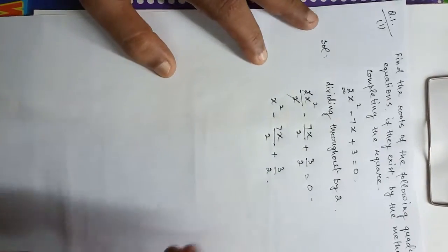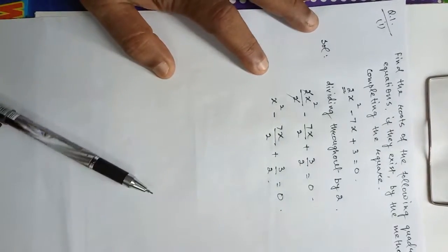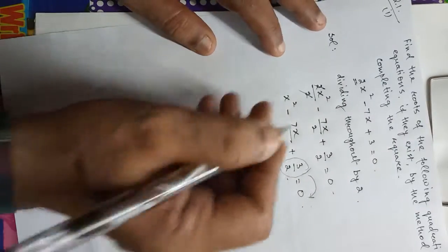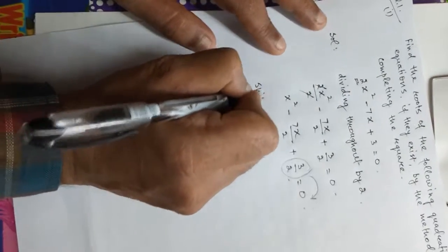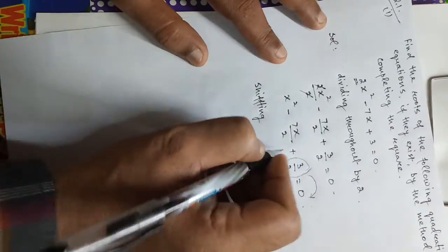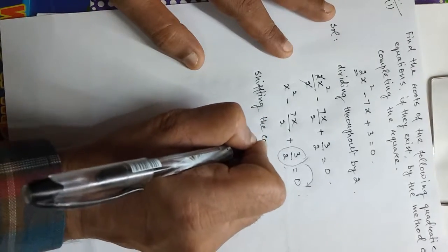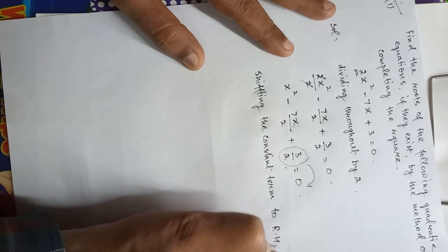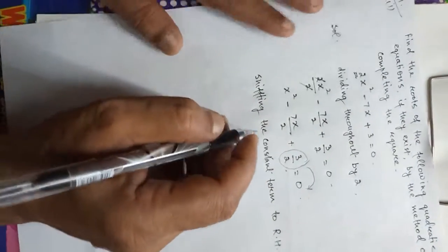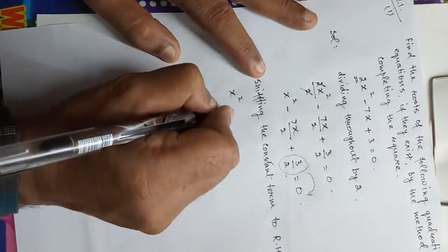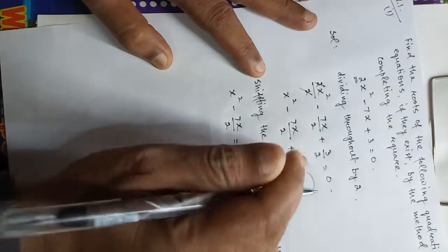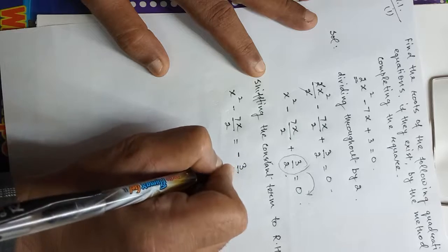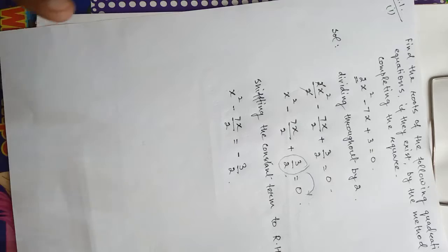Now the second step: we have the constant term, which is 3/2. We shift this constant term to the right-hand side. Shifting the constant term to the right-hand side, we get: x² minus 7x/2 equals minus 3/2. When we move 3/2 to the right side, it becomes minus 3/2. So in the second step, we shift the constant to the right-hand side.